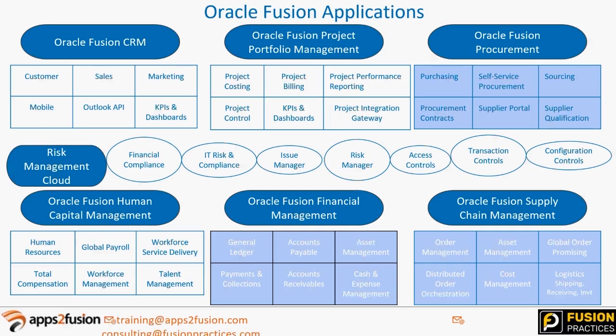Fusion Applications has several pillars, each separately licensed. We have Fusion CRM for customer relationship management — sales, marketing, and CRM activities. Then Fusion Project Portfolio Management with modules like project costing, billing, accounting, and project control. Fusion Procurement deals with purchasing, self-service procurement, sourcing, supplier qualification, requisitions, and purchase orders. Fusion Supply Chain Management covers order management, cost management, costing, and inventory.